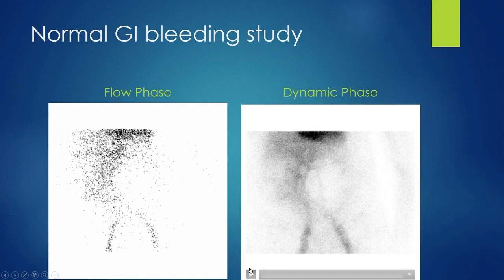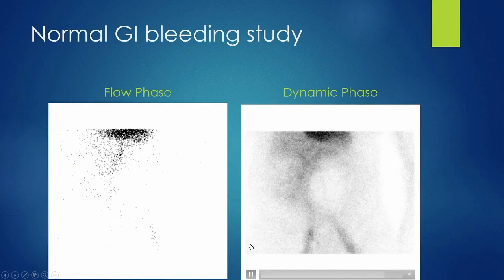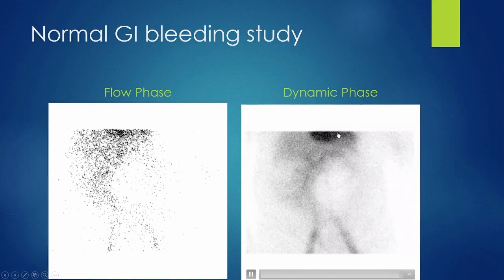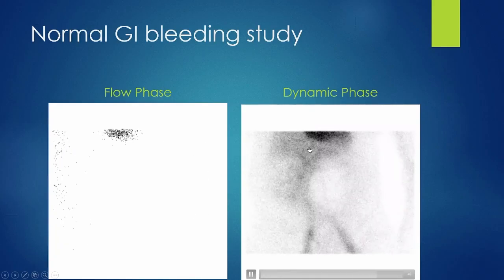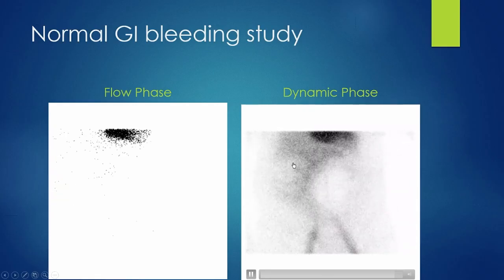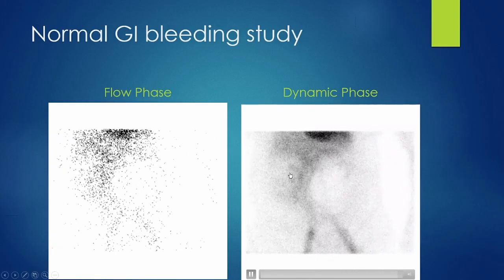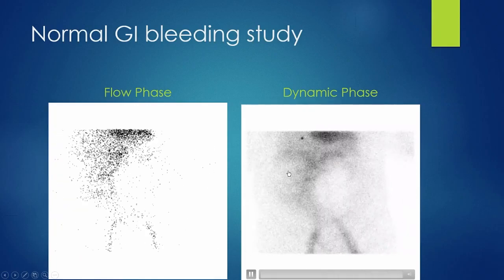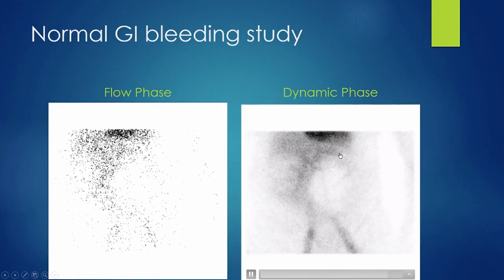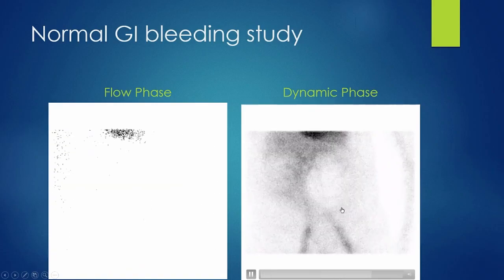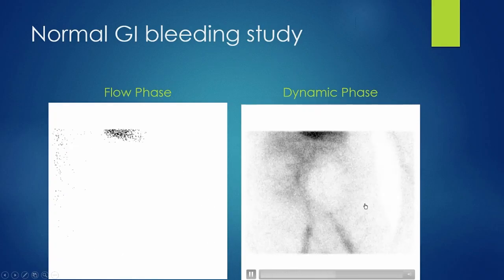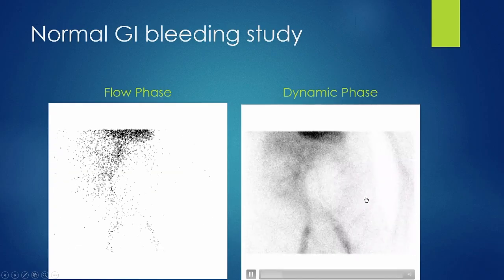What does a normal GI bleeding study look like? The heart is the hottest organ due to high blood pool activity. The liver, spleen, vasculature, and kidneys also get significant activity. On a normal study, we don't see any intraluminal bleeding. A key finding can be a photopenic area — for example, in one case the patient had a left nephrectomy and a large retroperitoneal hematoma, which was not actively bleeding at that time.